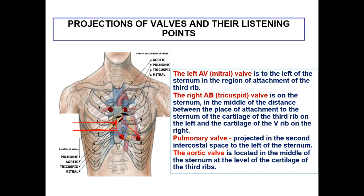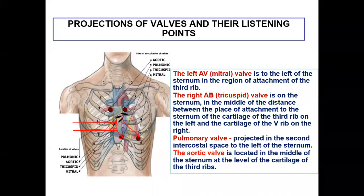The pulmonary valve is the only valve where the projected area and the auscultated area are the same — the second intercostal space, left side of the sternum. Erb's point is an additional point for auscultation of the aortic valve, located at the third intercostal space, left side of the sternum. It is mostly used to detect aortic regurgitation — for example, the diastolic sound in aortic regurgitation.